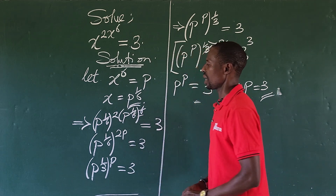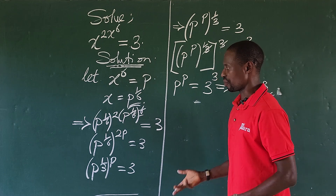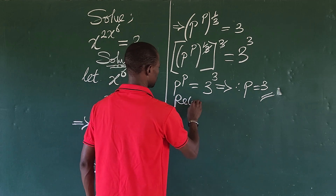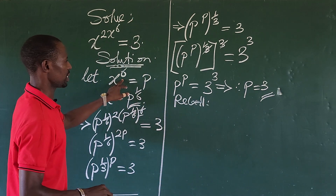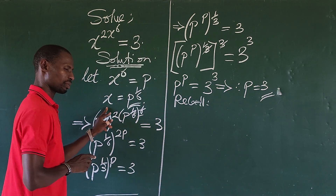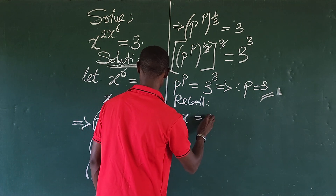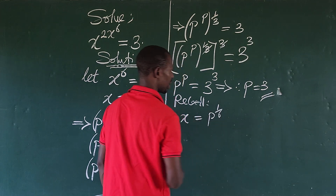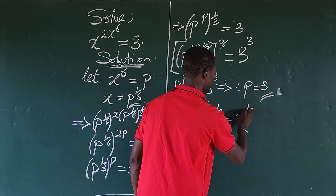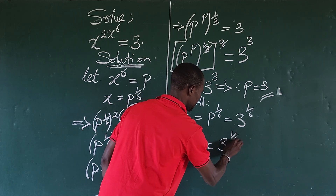Now we have p equals three. Let's recall the relationship between x and p. We had x to the power of six equals p, so x equals p to the power of one over six. Since p equals three, we get x equals three to the power of one over six. Therefore, x equals three to the power of one over six.